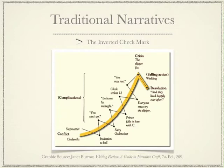In such narratives, characters say yes or no to each other — usually no — face obstacles and then overcome them again and again until they're finally triumphant or defeated. Cinderella, invited to the ball, finds her stepmother saying no, you can't go. But meeting her fairy godmother, finds a way to go anyway, with the caveat that she must return by midnight, and so on, until she's fitted with the glass slipper and married to the prince and they live happily ever after. Or not.